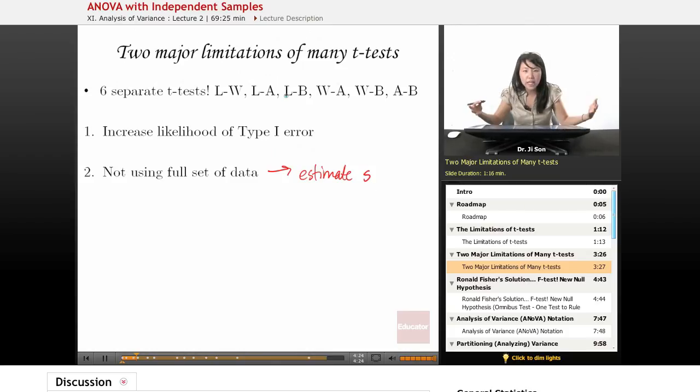You're ignoring some of your data to estimate s, and you're estimating s a bunch of different little times instead of having one giant estimate of s, which would be better. So both of these are major limitations of using many little t-tests.